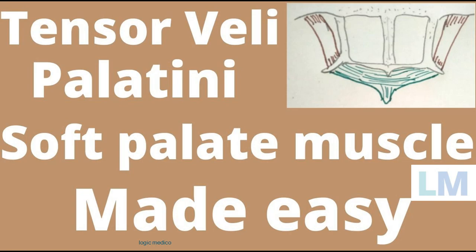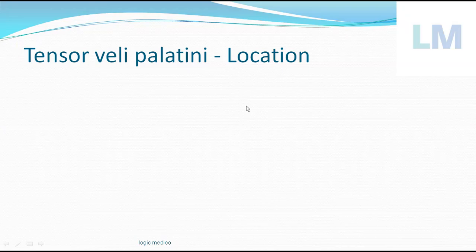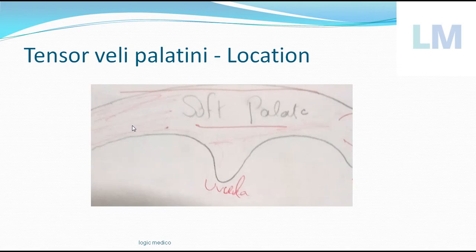Welcome to Logic Medico. Today's topic is tensor veli palatini, one of the muscles of the soft palate. The soft palate is located in the roof of the oral cavity. There is a bony structure called the hard palate, and just behind the hard palate there is a muscular curtain called the soft palate, which is covered by mucous membrane.